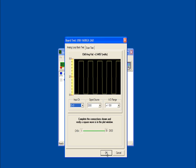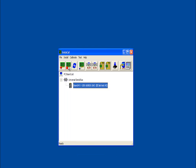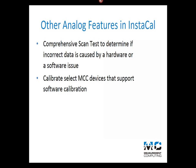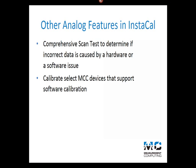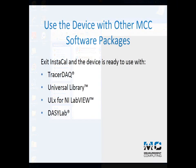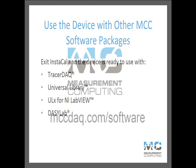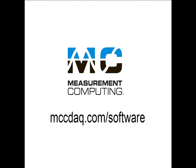When you finish installing, configuring, and testing your device with Instacal, select File Exit to close the program. Instacal also includes a scan test, which is a comprehensive diagnostic you can use to determine if incorrect data is caused by a hardware or software issue. Instacal can also be used to calibrate select MCC devices that support software calibration. Your device can now be used with other software products such as Tracer DAC, Universal Library, ULX, NI LabVIEW, and DaisyLab. To learn more about Instacal and the other software packages mentioned in this video, please visit our website at www.mccdaq.com/software. Thanks for watching.